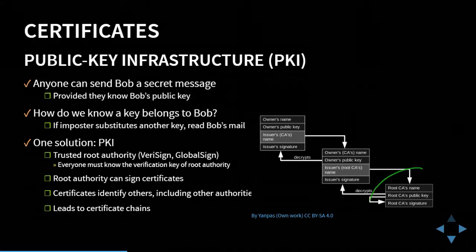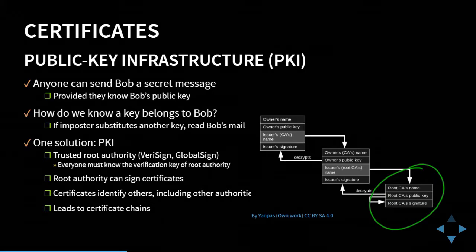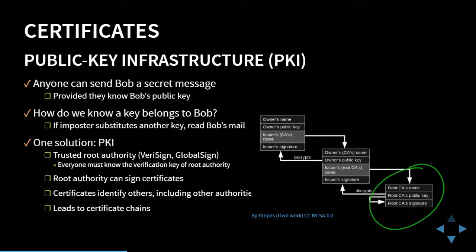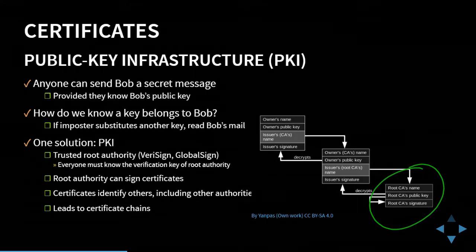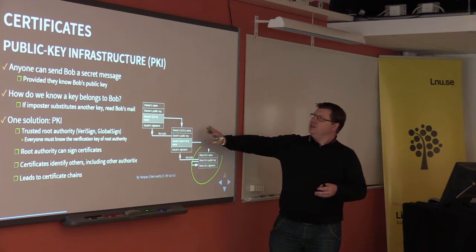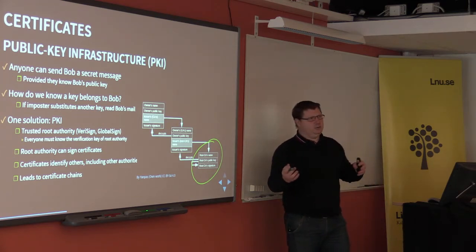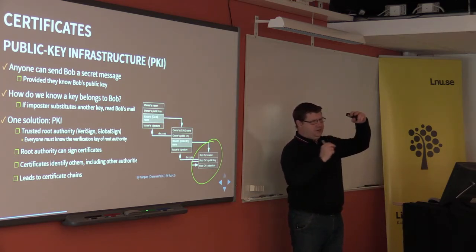The root certificate authority can issue special certificates that are allowed to create certificates in their name. As a private citizen you probably can't purchase one of these — they are really expensive and the authority will inspect that organization carefully, because it's their name that will appear on the certificates being signed. You will see this in web services: when you look at a certificate, you will probably see a chain of certificates.